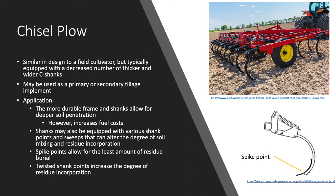The chisel plow is similar in design to the field cultivator but is typically equipped with a decreased number of thicker and wider C-shanks. This implement may also be used for either primary or secondary tillage. The more durable frame and shanks allow for deeper soil penetration. However, this can also increase energy and fuel costs. Subsequently, chisel plows are typically not very wide due to the need for an increased amount of force to pull it. The shanks themselves may be equipped with various shank points and sweeps that alter the degree of soil mixing and residue incorporation. Typically, spike points allow for the least amount of residue burial while twisted shank points increase the degree of residue incorporation.